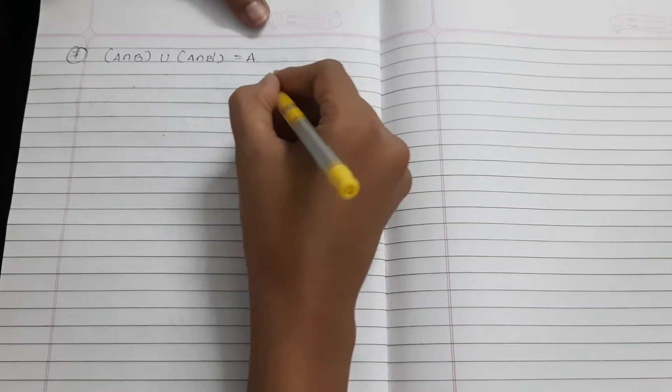Hello everyone, welcome back to Z-theory. Last video we saw properties of complement of a set, and we continue from there. Next property is complement of a set: A intersection B union A intersection B dash is equal to set A. Let me take an example.